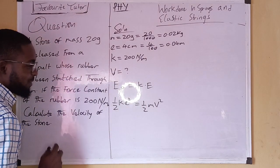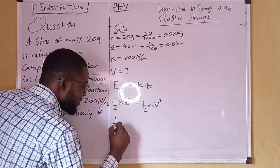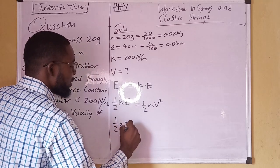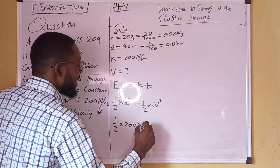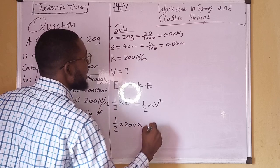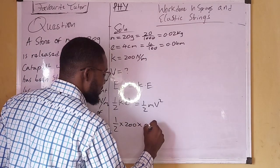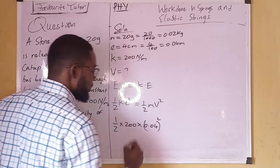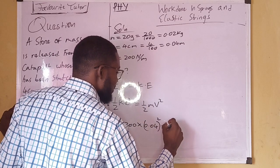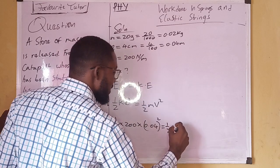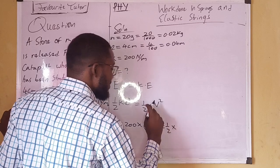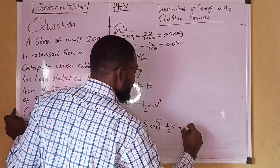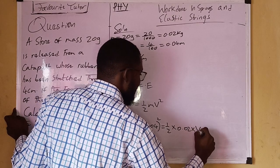So we set up the equation: ½ × k × x² = ½ × m × v². Substituting values: ½ × 200 × (0.04)² = ½ × 0.02 × v².